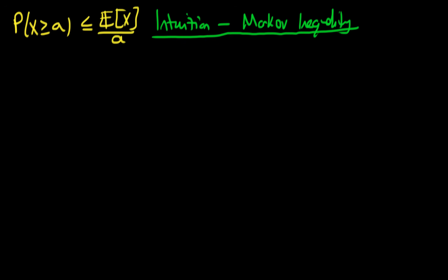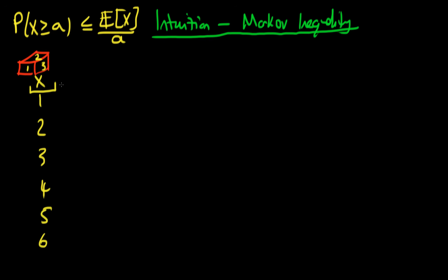The example I'm going to give here is the case of a die. A die is a cube which on each side has a different number written. The numbers take on the values 1, 2, 3, all the way through to 6. So our variable X is going to represent the value which our die takes on if we just throw the die.